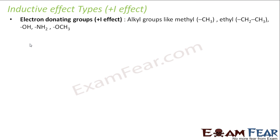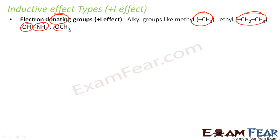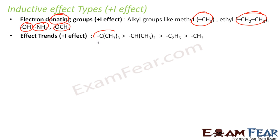The plus I effect groups are electron-donating groups — for example, methyl, ethyl, OH, NH2. These have plus I effect because they donate electrons. The trend is: tertiary (C(CH3)3) has the most plus I effect, then secondary, then ethyl (C2H5), then methyl. They are called plus I because they donate electrons — plus means adding electrons to the system.